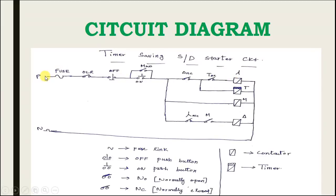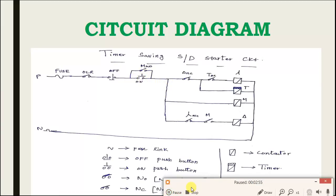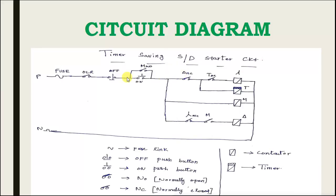If you go down the face, on push button — first, if you push the press button, to that you will supply. What do you do? The timer is going to supply. This contact is activated, so delta contactor — sorry, star contactor — that is simultaneously on main contactor. So main contactor — what is it? Star main contactor.